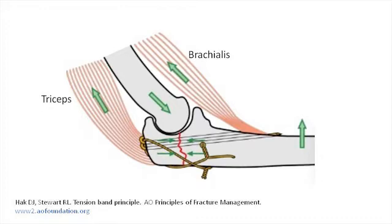In this biomechanical diagram we can see how the forces generated by the pull of triceps and brachialis are converted into compression at the fracture site, in particular the articular surface, with the distal humerus acting as a fulcrum. This promotes primary healing with absolute stability, as advocated for the vast majority of intra-articular fractures.